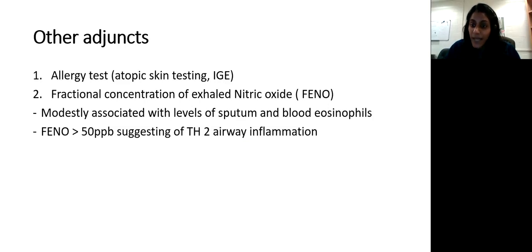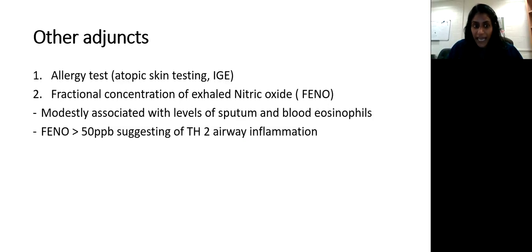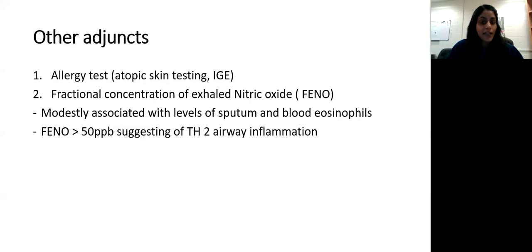Other adjuncts for diagnosing asthma include allergy testing — we often use the West Virginia allergy panel to identify allergic components, suggesting allergic versus non-allergic asthma. Another tool is the fractional concentration of exhaled nitric oxide (FeNO), which gives a measure of Th2 inflammation in the airway. It is an adjunct to help determine if there is type 2 inflammation, but it is not yet standard of care.